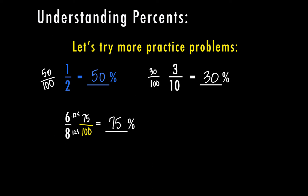There's an easier way — look at the fraction and see if we can reduce it. Six and eight are both even, so dividing both by two gives three-fourths. Four goes into one hundred twenty-five times, and three times twenty-five is seventy-five. So we have seventy-five percent. Either way you do it, six-eighths and three-fourths are equivalent — six out of eight people is the same representation as three out of four people, and in both cases it's seventy-five percent.